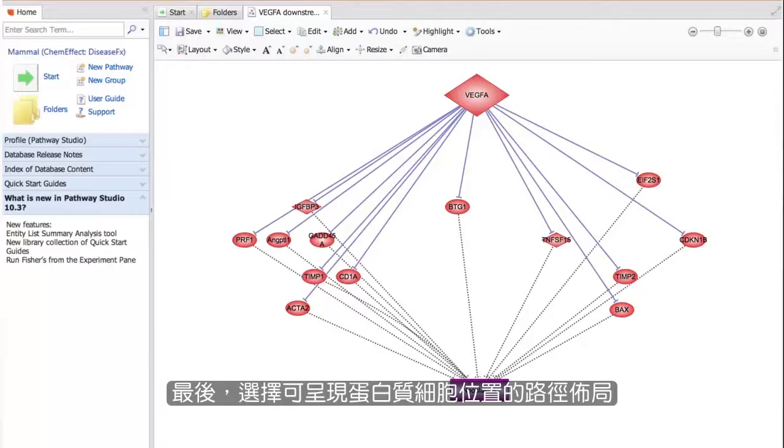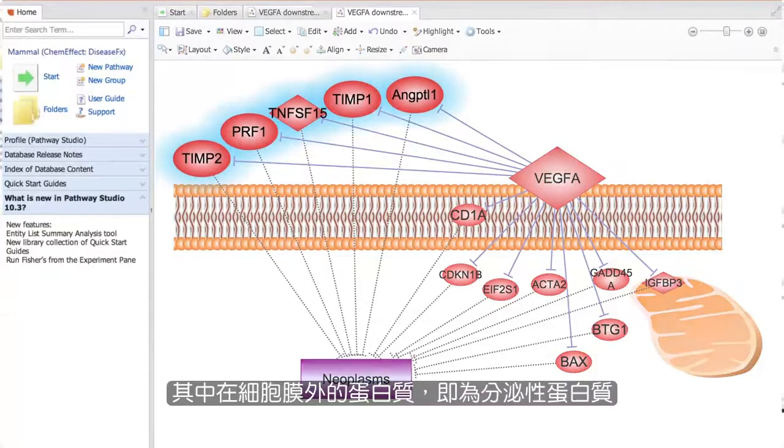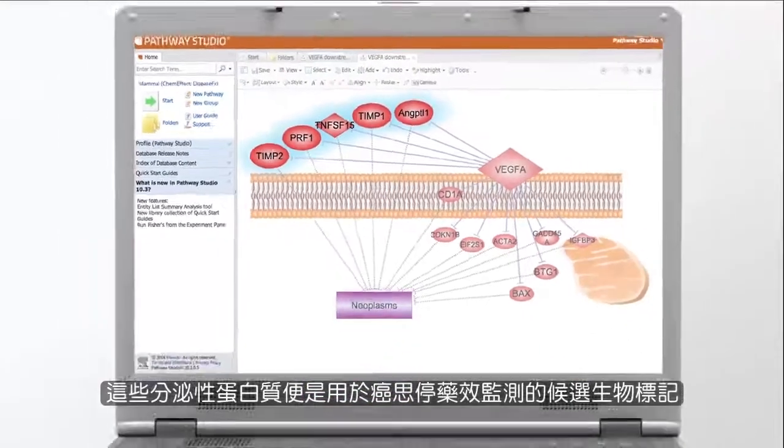Finally, select the pathway layout that displays the cellular localization of the proteins. Those proteins outside the membrane are secreted proteins and they are candidate efficacy biomarkers for Bevacizumab.